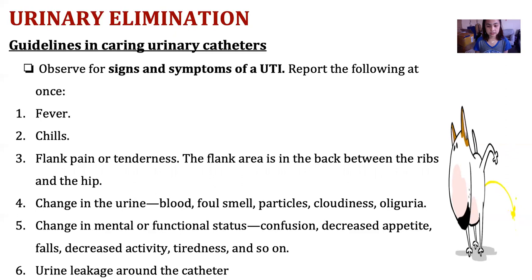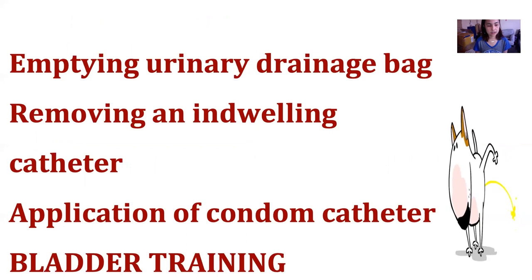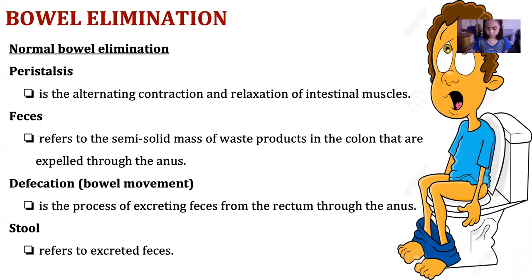Observe for signs of UTI such as fever, chills, flank pain, abdominal or back pain, changes in urine including blood, foul smell, particles, cloudiness, and oliguria, as well as changes in mental or functional status indicating possible septic shock, and urine leakage around the catheter. As nursing assistants, we should study procedures including providing catheter care, emptying urine drainage bags, removing an indwelling catheter, and application of a condom catheter and bladder training.